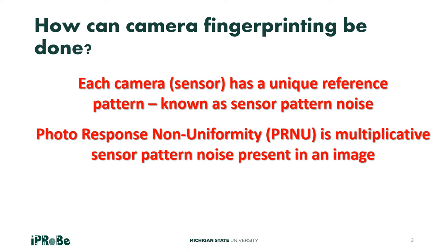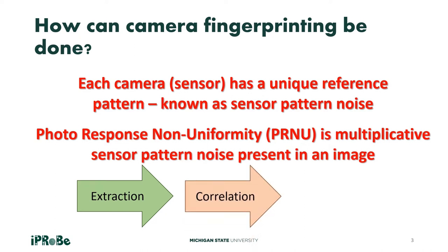It usually involves three steps. The first, known as the extraction step, involves extracting the PRNU from an image by removing the scene. The second step involves correlation, where the extracted PRNU is matched against known reference patterns.